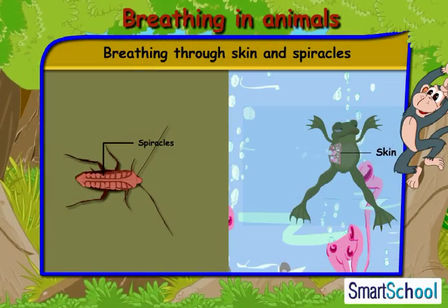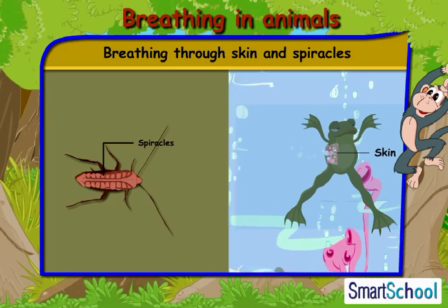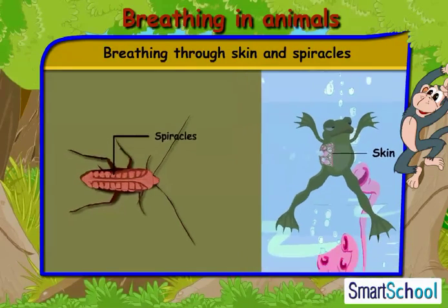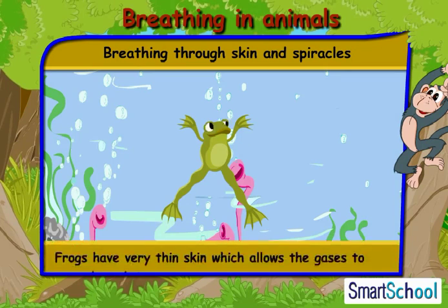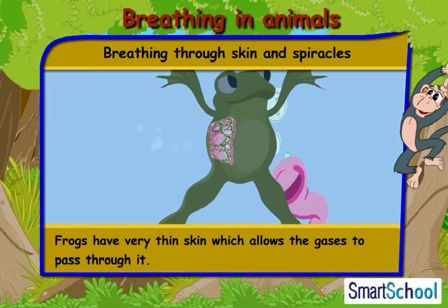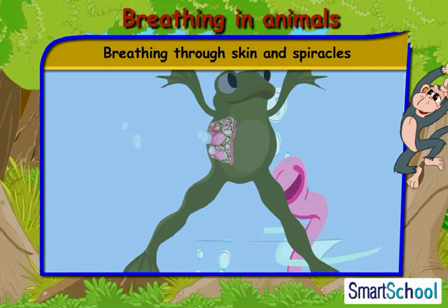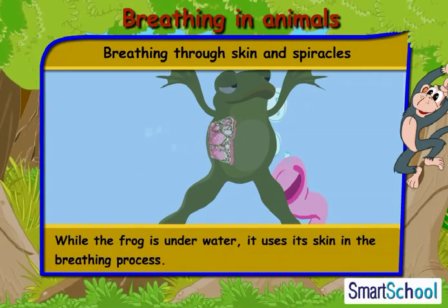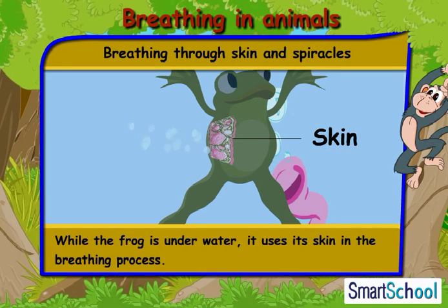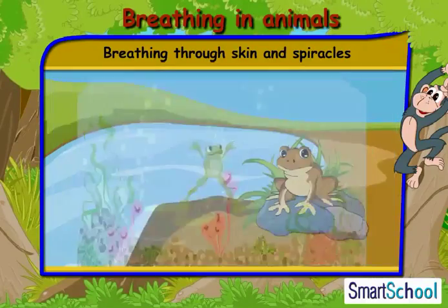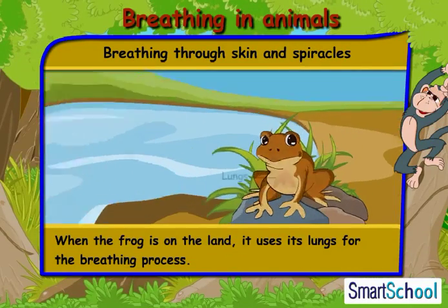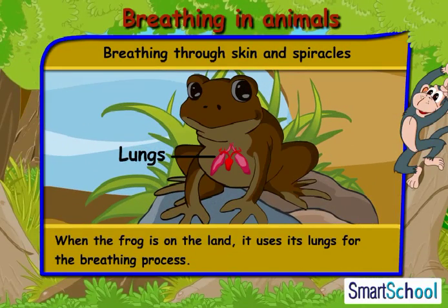Now let us understand the breathing process through the skin and the spiracles. Frogs have very thin skin which allows gases to pass through it. When the frog is underwater, it uses its skin for the breathing process. When the frog is on land, it uses its lungs for the breathing process.